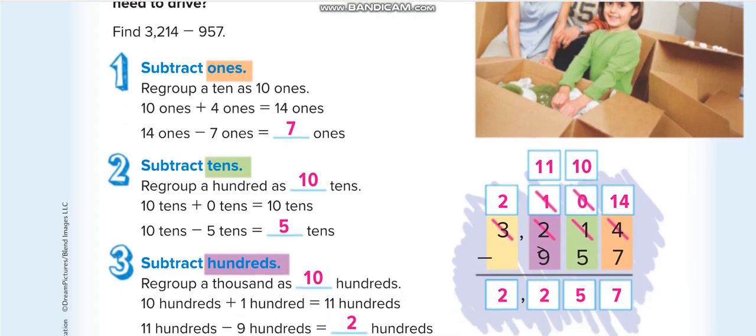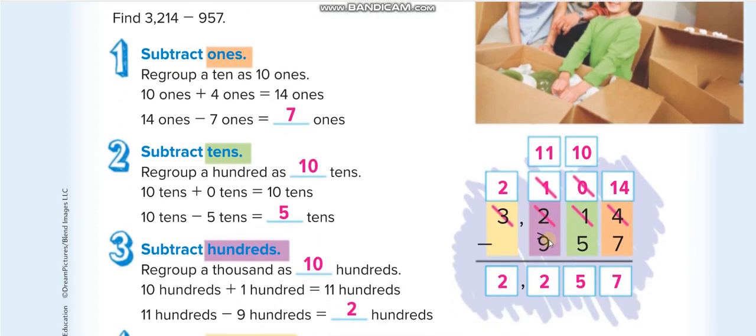Here in the first example, we have to minus 957 from 3,214. In subtraction, we always write the big number up and the smaller number down. The place values are under each other. We don't have thousands here so we left the thousands place.